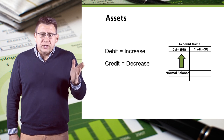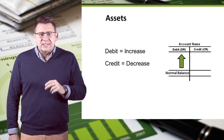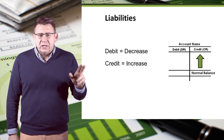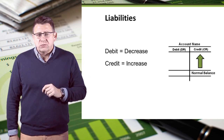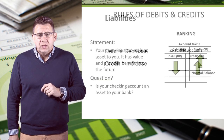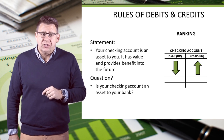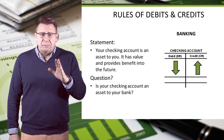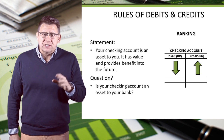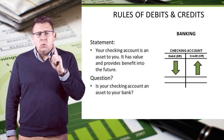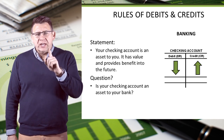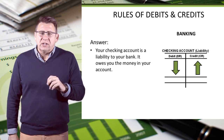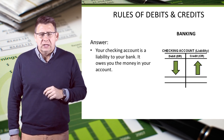Let's recall that assets are increased with debits and liabilities are increased with credits. Your checking account is an asset to you — it has value and provides benefit into the future, assuming your balance isn't overdrawn. But what is your checking account to your bank? Your checking account is a liability to your bank.